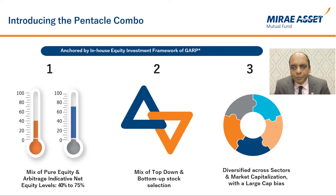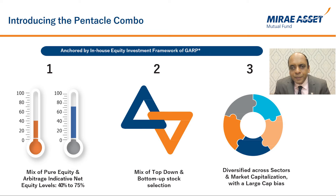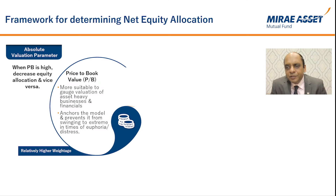The equity portion will be a mix of pure equity and arbitrage opportunities, with a minimum of 65% of the overall portfolio. Net equity levels will be managed dynamically within the range of 40% to 75% based on an internal asset allocation framework. If the net equity allocation is below 65%, the residual will be invested in arbitrage opportunities so that overall equity allocation is 65% or higher. Stock selection will be a blend of top-down and bottom-up approaches, diversified across sectors and market capitalizations with a large-cap bias. The fund uses two parameters to determine net equity allocation — the first is price-to-book, an absolute valuation parameter suitable for asset-heavy businesses and financial companies, which anchors the model and prevents extreme moves during market euphoria or distress.